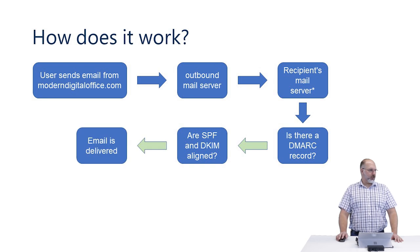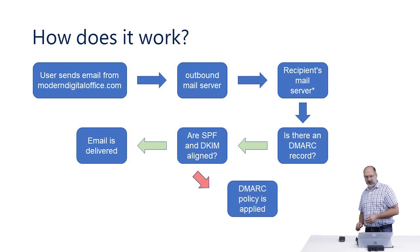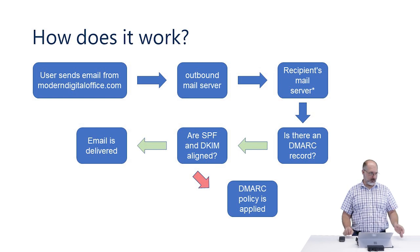If those are aligned, then the email is delivered. If they're not aligned, then the DMARC policy is applied, and the DMARC policy itself can do several different things such as nothing, or quarantine the mail, or reject the mail.